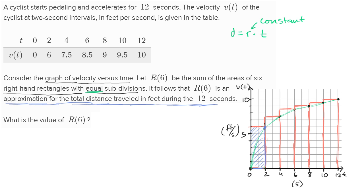For the first rectangle, area equals height times width: the velocity at the end of the two-second interval is six feet per second times two seconds, which gives 12 feet. That's an overestimate, because we're taking the fastest velocity of the interval — the cyclist started at zero feet per second. If we did left-handed rectangles, it would be an underestimate, because we'd be taking the slowest velocity over the interval. But this is an approximation.